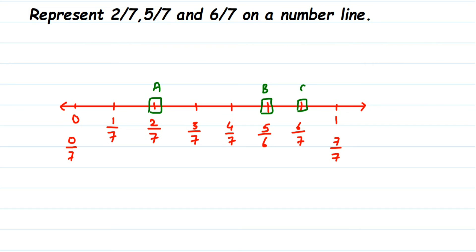In case you have numbers like nine by seven, that would fall between one and two. We've gone up to six by seven here, so the next part after seven by seven would be eight by seven. For numbers like nine by seven or ten by seven, make seven equal parts between one and two and continue the marking.